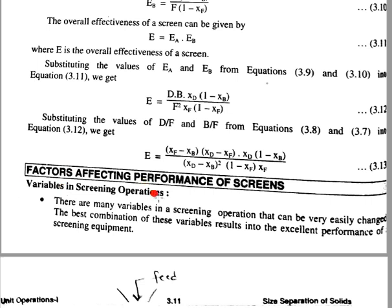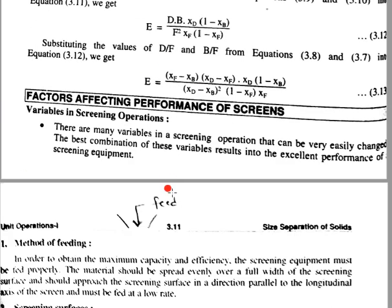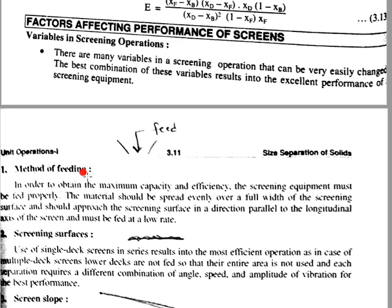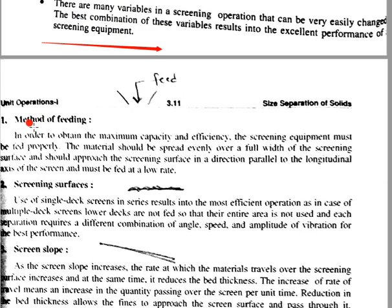Now, factors affecting the performance of this screen. These are the various factors that can affect the performance of the screen. The first one is method of feeding — how the material is fed, the size of material, and the capacity of material all depend on the method of feeding.